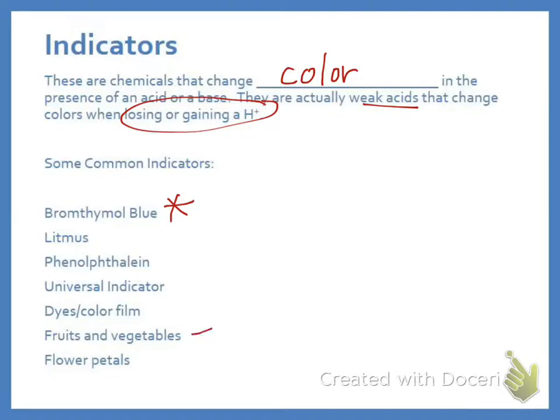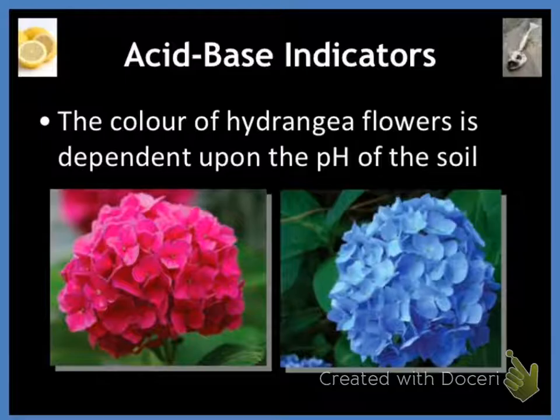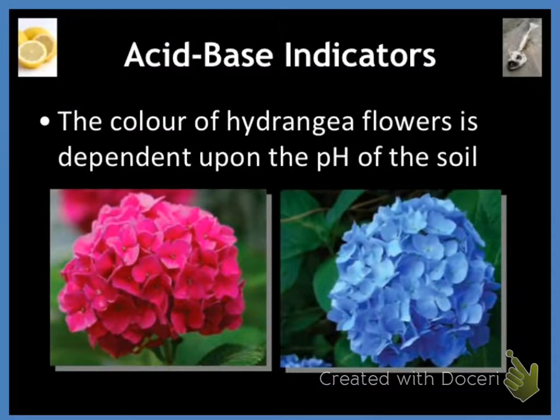Some other things are fruits and vegetables and flower petals can also act as indicators. You do not have to know the colors. I just want you to see what some of them do and the different pH levels that they change at. That's a picture of hydrangeas in the presence of an acid. So the soil is acidic, they're bright pink. If the soil is basic, it's blue. If the soil is neutral, they're actually purple. You can actually change the color of your blooms by changing the pH of your soil.